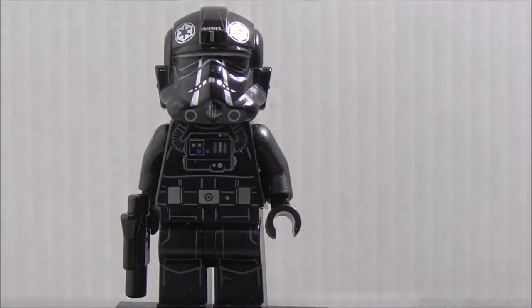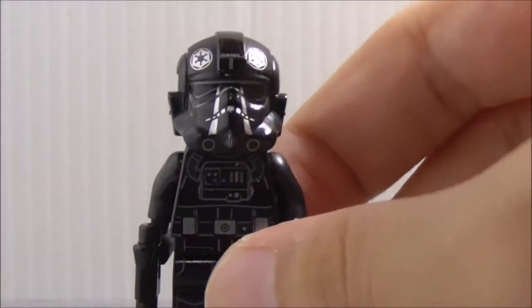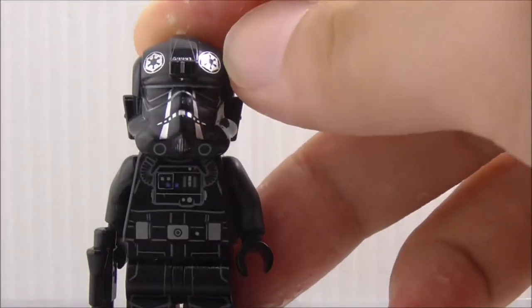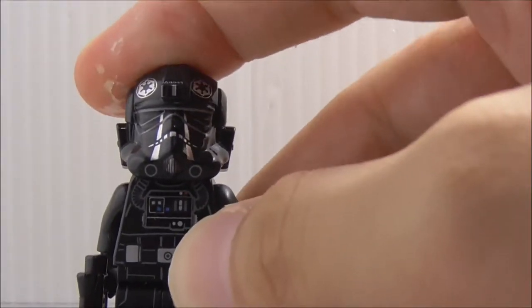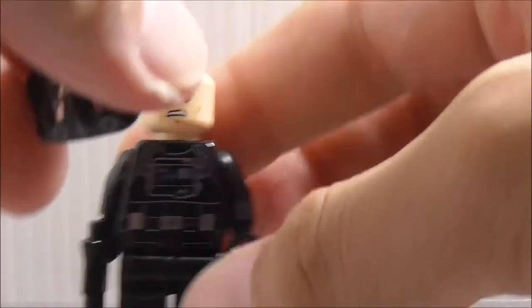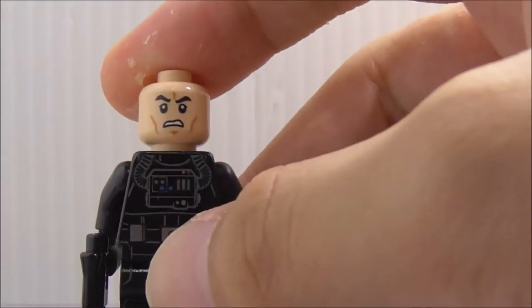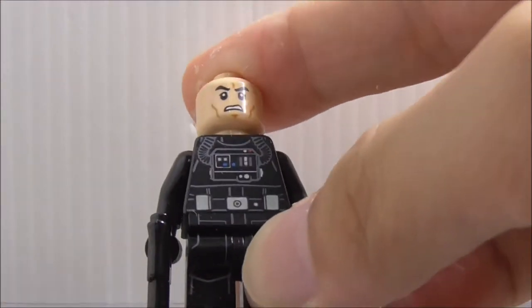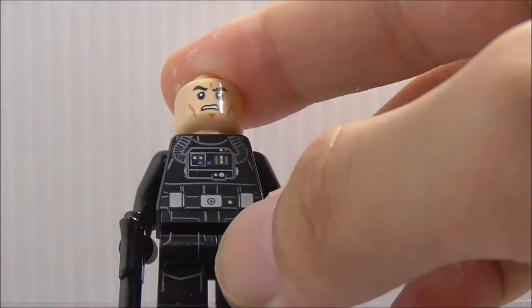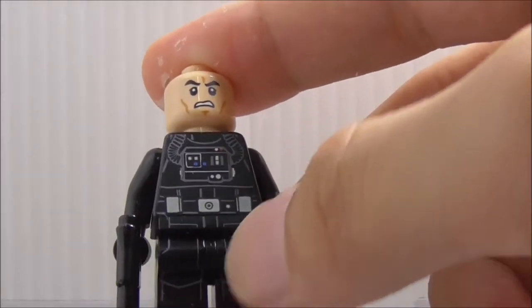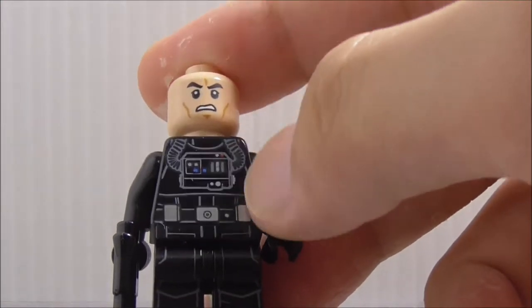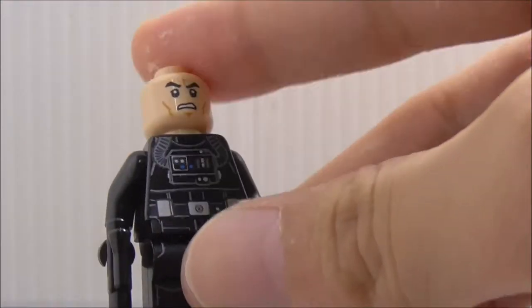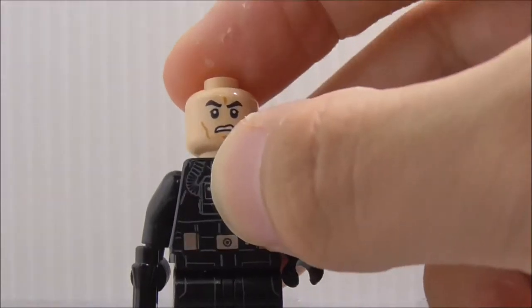The helmet piece is really cool, you have the Imperial symbol there and it looks really nice. Underneath is the angry clone face. The torso printing has the life support system with tubings and belts from the Death Star troopers.